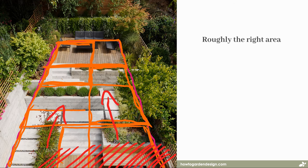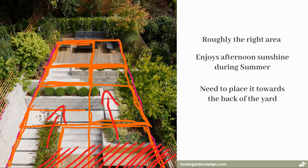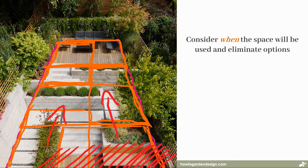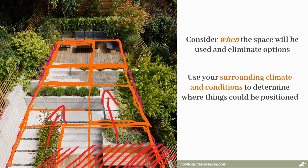So, we're in roughly the right area now. If we want an informal entertaining space that enjoys afternoon sunshine during summer, we need to place it towards the back of the yard. If we could raise it, even better, but that might be dependent on cost. But this whole sequence of considering when the space will be used and eliminating options is one really clear way you can use your surrounding climate and conditions to determine where things could be positioned in your design.